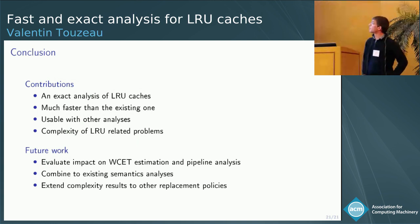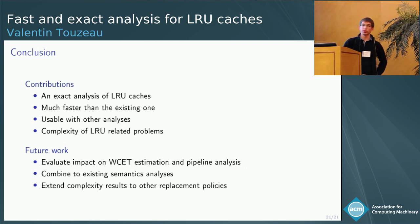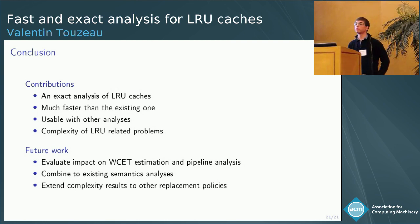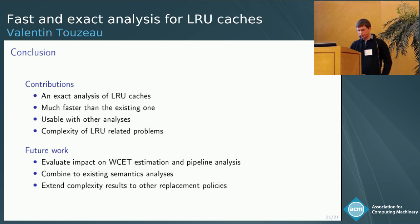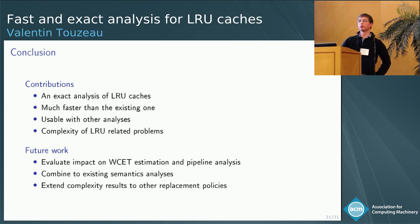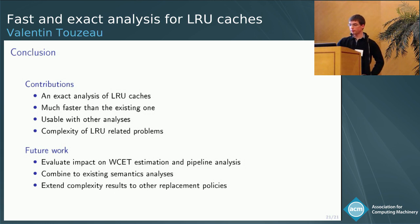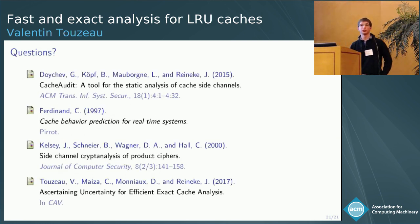As a conclusion, we have an exact analysis for LRU caches which is much faster than any existing exact approach — to our knowledge, our previous attempt was the only prior work performing such classification. We also have complexity results in the paper. Because our new approach uses abstract interpretation rather than model checking, it can be easily combined with existing domains to reintroduce parts of the program semantics — such as loop and test conditions — and relax the assumption that all paths are feasible in the graph.